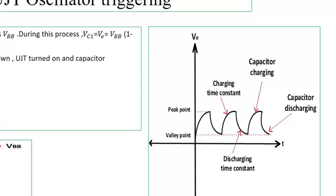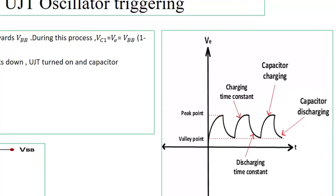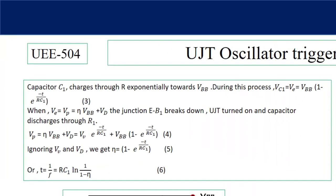Now if initial capacitor voltage is VV, at t = 0 capacitor voltage is VV valley point voltage. Then the expression of peak point voltage VP = η VBB + VD = (VBB - VV) (1 - e^(-t/RC1)) + VV.